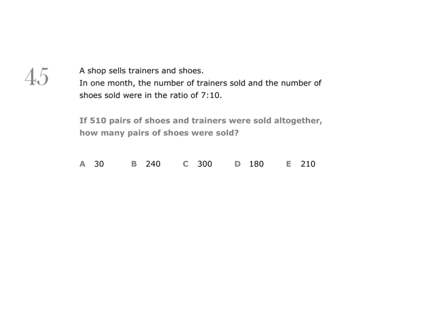Question 45. A shop sells trainers and shoes. In one month, the number of trainers sold and the number of shoes sold were in the ratio of 7 to 10. If 510 pairs of shoes and trainers were sold altogether, how many pairs of shoes were sold?